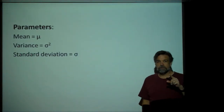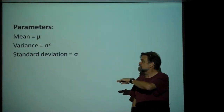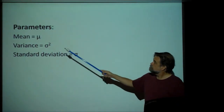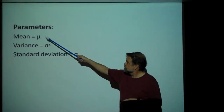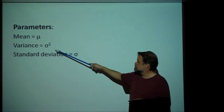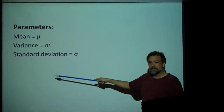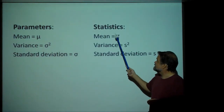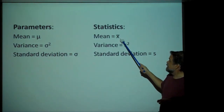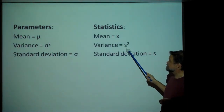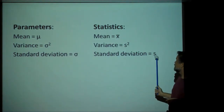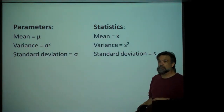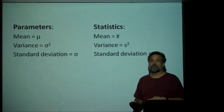Remember, there's a difference between population standard deviation and sample standard deviation. Parameters — like mu, sigma squared, and sigma — describe a population. Statistics — like x-bar for the mean, s-squared for the variance, and s for standard deviation — describe a sample of the population.